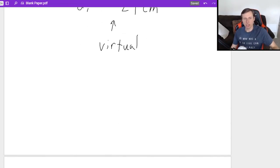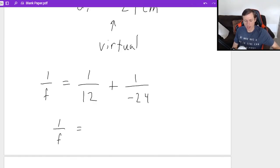Now I just plug in my equation 1 over F equals 1 over DO, which is 12 plus 1 over DI, which is negative 24. I plug in the right side into my calculator, 1 over 12 plus 1 over negative 24. I'm going to get 1 over F equals 0.0416 repeating.